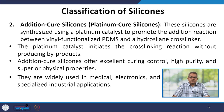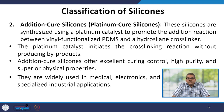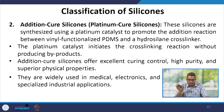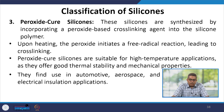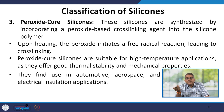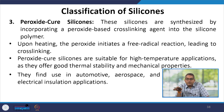Addition cure silicones, sometimes referred to as platinum cure silicones, are synthesized using a platinum catalyst to promote the addition reaction between vinyl-functionalized PDMS and a hydrosilane cross-linker. The platinum catalyst initiates the cross-linking reaction without producing byproducts. Addition cure silicones offer excellent curing control, high purity and superior physical properties, and are widely used in medical, electronics and specialized industrial applications.